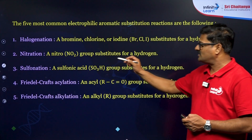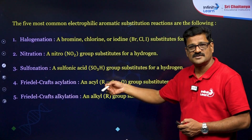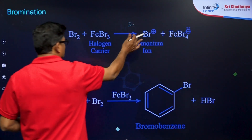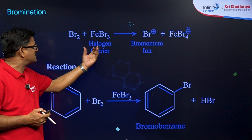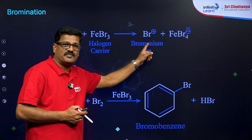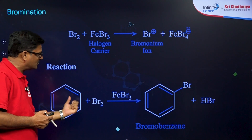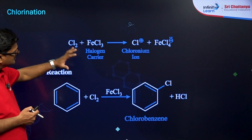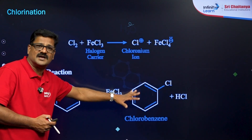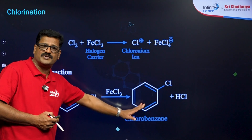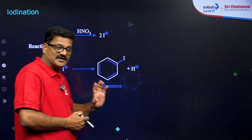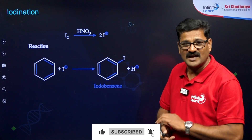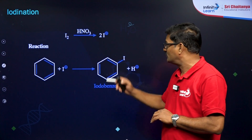In nitration, the nitro group is substituted. In sulfonation, the sulfonic group is substituted. For bromination, a Lewis acid halogen carrier is used — bromine generates Br⁺ (brominium ion) as the electrophile, which reacts to give bromobenzene. Chlorination works the same way, giving chlorobenzene. For iodination, there is no halogen carrier; instead, HNO3 is used as an oxidizing agent, so iodine in the presence of HNO3 gives iodobenzene.